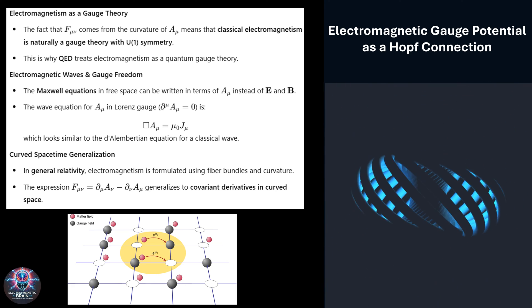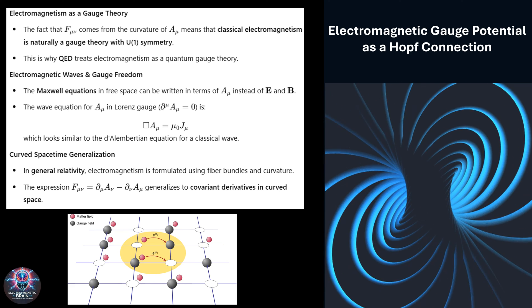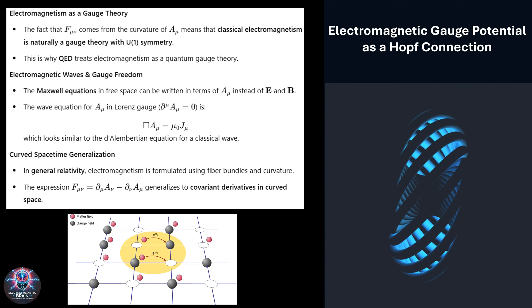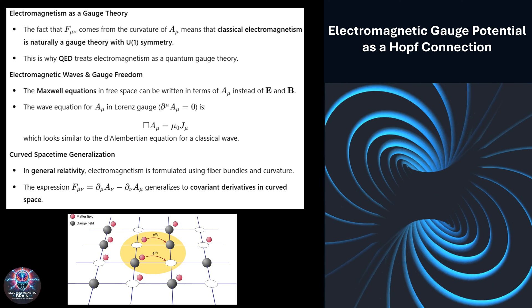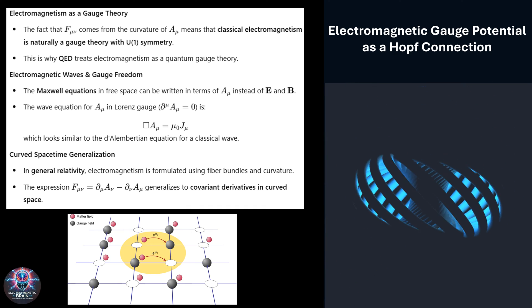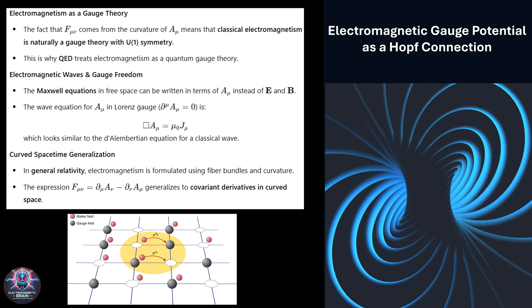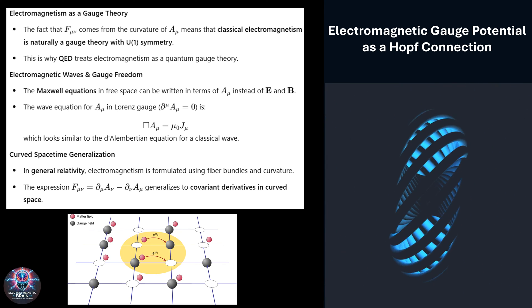Now, when we bring special relativity into the picture, Maxwell's equations take on an elegant new form. Instead of dealing separately with electric and magnetic fields, we now describe everything using the field strength tensor F mu nu, which is anti-symmetric and neatly captures all electromagnetic interactions. The sources of the field, meaning electric charges and currents, are represented by the four current J mu. In this relativistic framework, Maxwell's equations simplify into a compact expression: del nu F mu nu equals mu 0 J mu. This equation generalizes the classical Maxwell equations into a form that works seamlessly in spacetime. But what if we go one step further? What if we consider curved spacetime, as in Einstein's general relativity? In that case, electromagnetism naturally extends into a more advanced framework, where we replace ordinary derivatives with covariant derivatives to account for the effects of gravity.